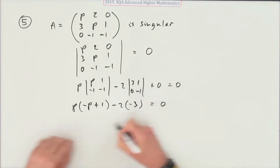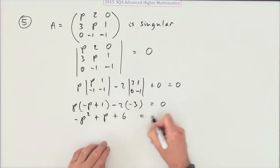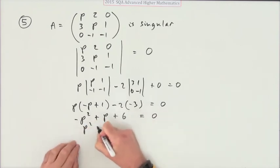Let's just flip the signs. We end up with this quadratic: p squared minus p minus 6 equals 0. Product multiplying to give 6 and have a difference of 1, that's